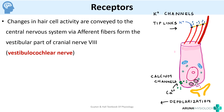Once the hair cell receptors are depolarized, changes in hair cell activity are conveyed to the central nervous system via the vestibular part of cranial nerve VIII — the vestibulocochlear nerve. This is how the semicircular canals detect changes and send impulses.